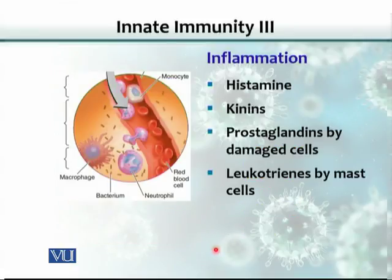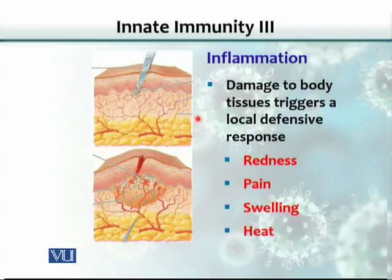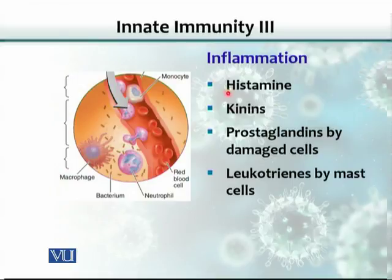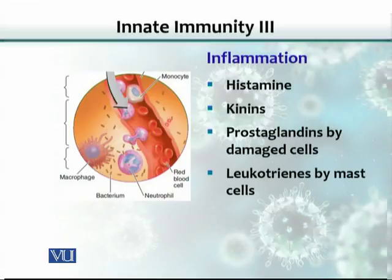Inflammation occurs when there is damage — for example, a knife penetrating the skin. This damages cells locally, and those cells start releasing various cytokines or chemicals like histamines, kinins, and prostaglandins, which invite other cells of the immune system to the area. Histamine and kinin are vasodilators, locally produced by the damaged cells.